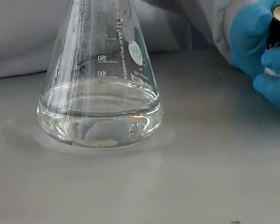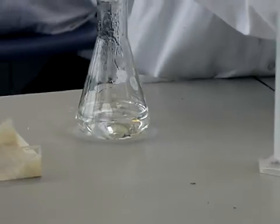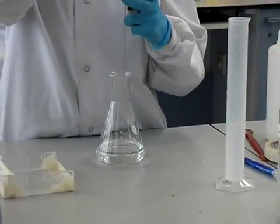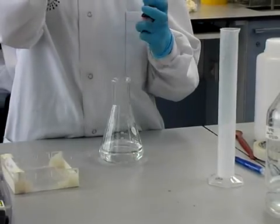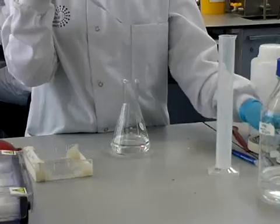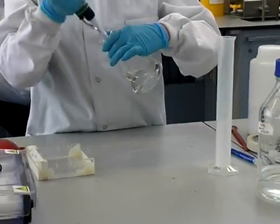The agarose gel has now been dissolved and to the gel will be added 3 microliters of Ethidium Bromide. Ethidium Bromide is a compound which will attach to the DNA and enable us to visualize the DNA under UV light.